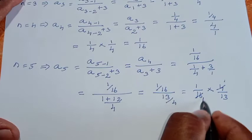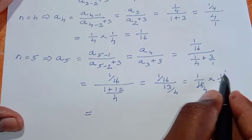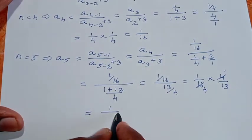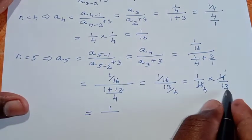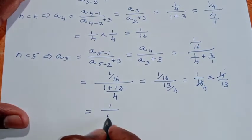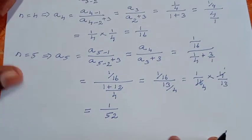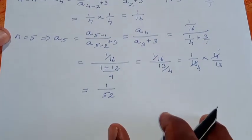Converting the division to multiplication: 1/16 × 4/13. Canceling, 4 into 16 is 4, so we get 1/1 × 1/13. Numerator is 1, denominator is 4 × 13 = 52. So the 5th term is 1/52.